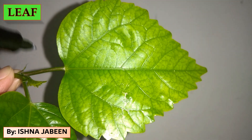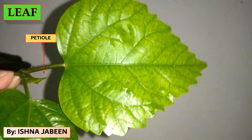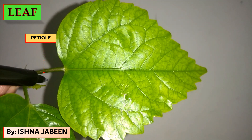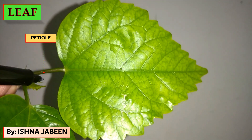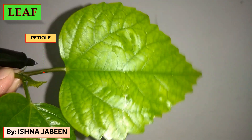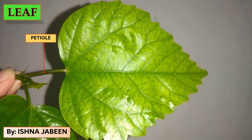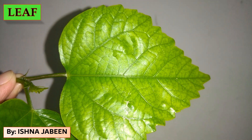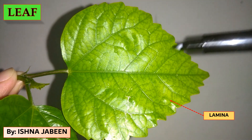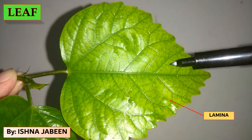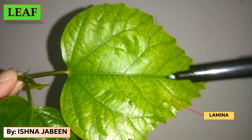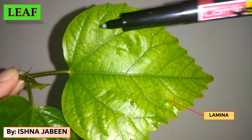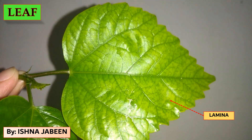The first part is the petiole — this is the stalk through which the leaf is joined to the plant. Then we have the green portion of the leaf, which is called the lamina.